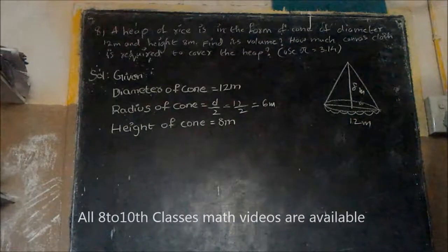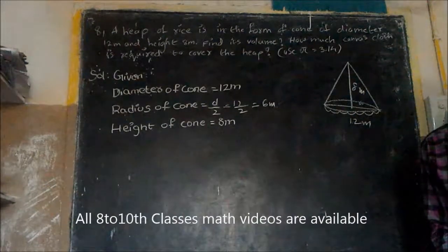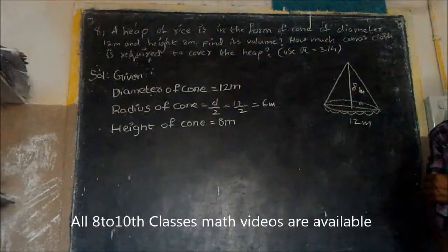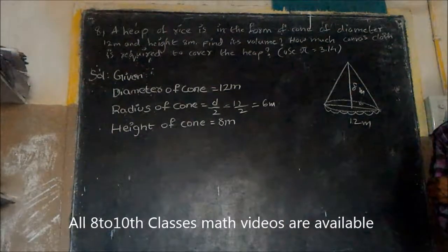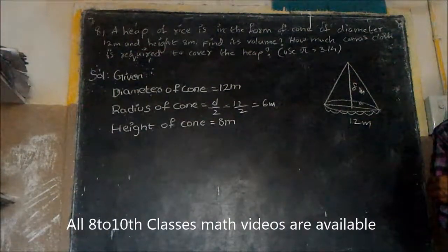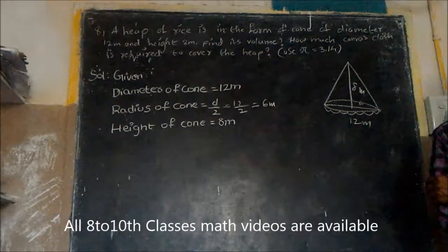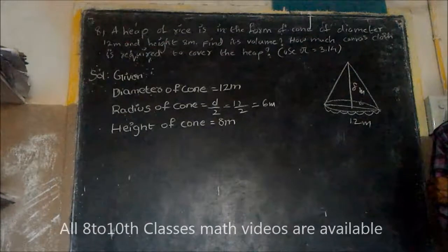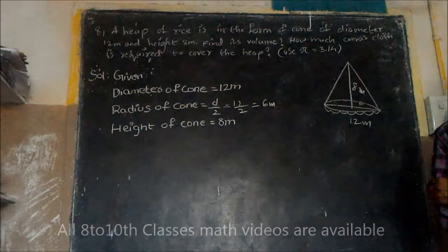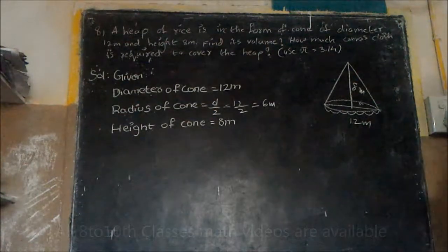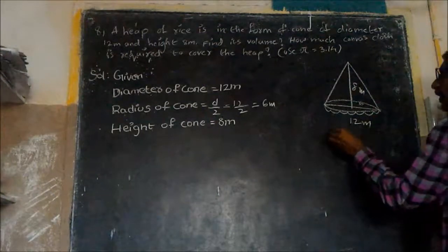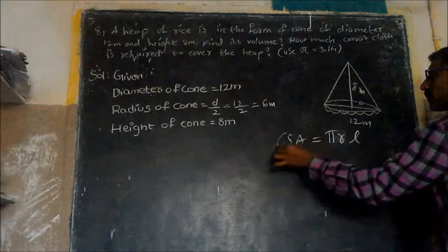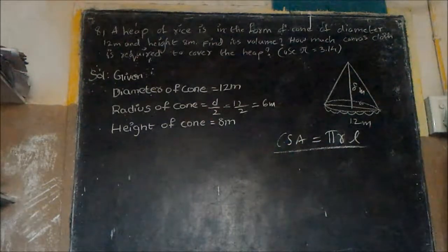Here we have to find the cloth required to cover this heap. That means we have to find the curved surface area of the cone, as that helps to cover the heap. The formula to find the curved surface area of the cone is pi R L.